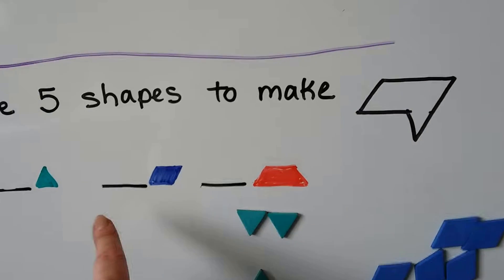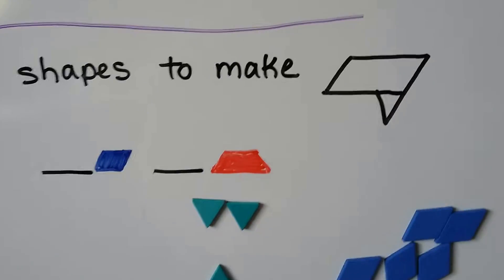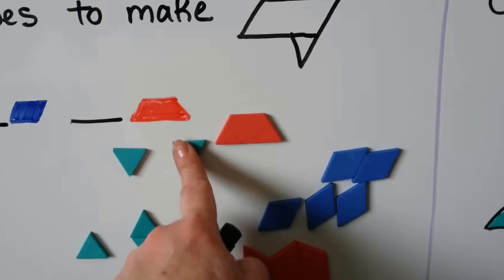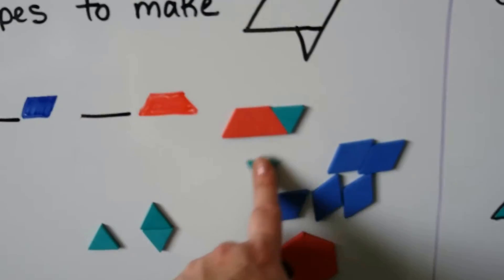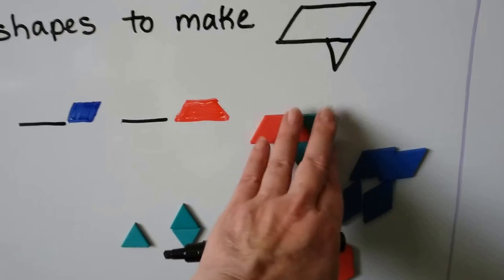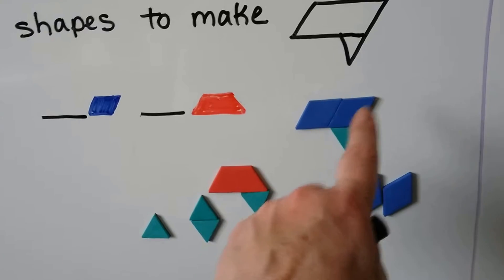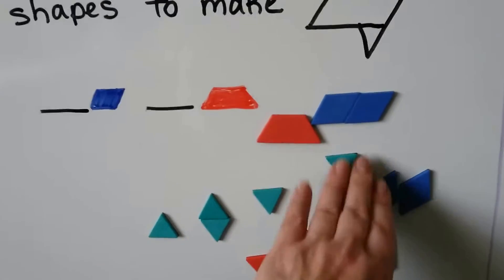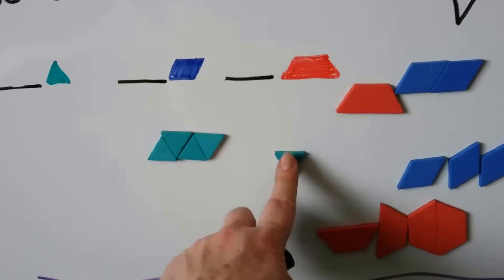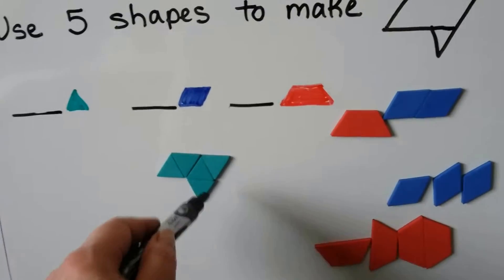Now we need to use five shapes to make this shape. I can see a triangle right here and a parallelogram. A trapezoid and two triangles can make that shape but that's only three. Two rhombuses and a triangle is also only three. What if we put all triangles together? We made the same shape using one, two, three, four, five triangles.